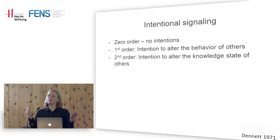If you signal as an animal, it's mainly about altering the behavior of others. But what we are thinking about when we talk about intention in language is that we want to not only alter the behavior of others, but we also have the intention to alter the knowledge state of the others — and that means you have to have an idea that someone else has a knowledge state different from yours.